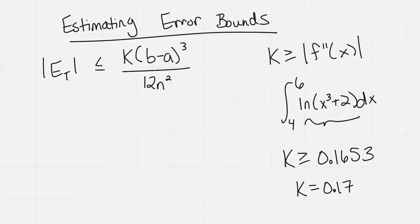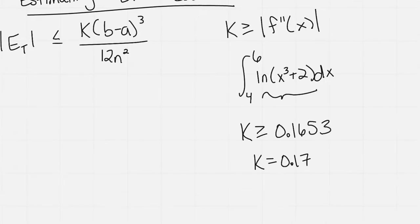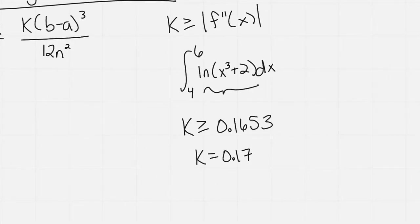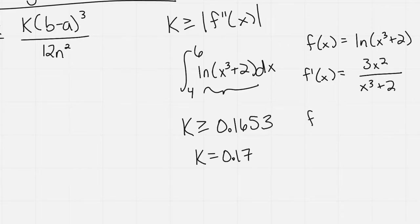And so if you were to do this by hand, we could look at the derivatives real quick. Again, other videos show it. But if we have f of x is equal to this natural log of x cubed plus 2, I'm not going to go through all the derivative steps, but the first derivative would be 3x squared all divided by x cubed plus 2.